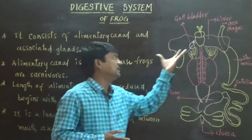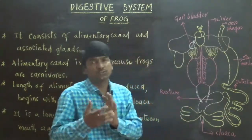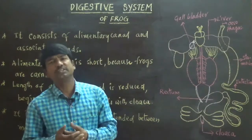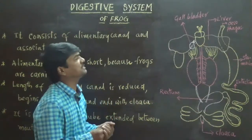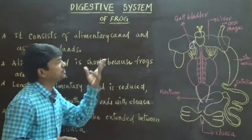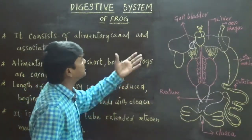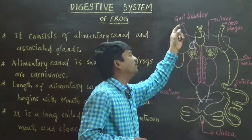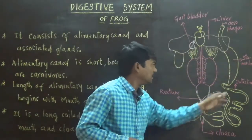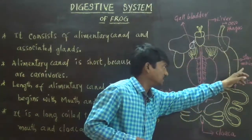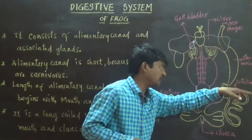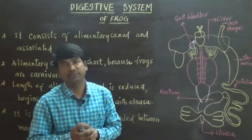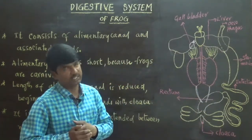The alimentary canal has associated glands. These associated glands include the liver, gallbladder, gastric glands, and intestinal glands, which are present for the purpose of digestion of food.